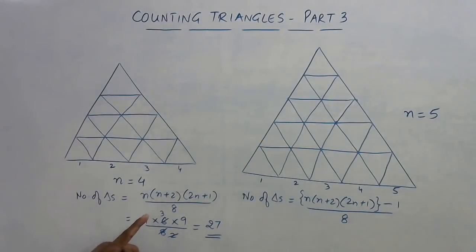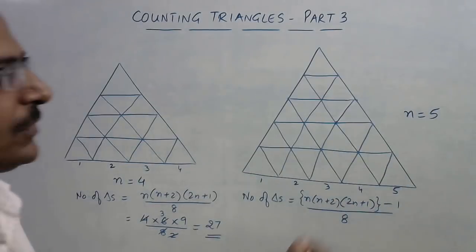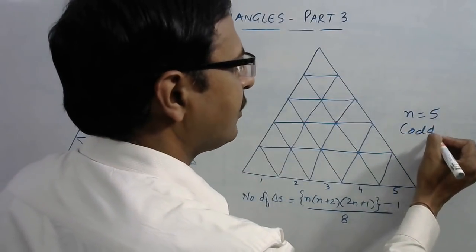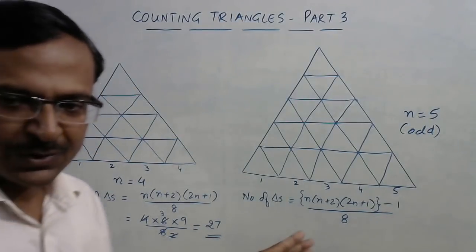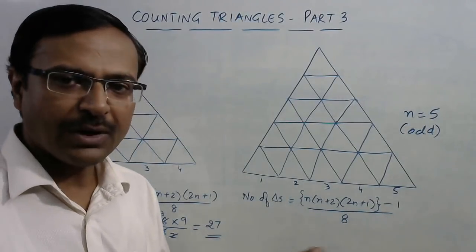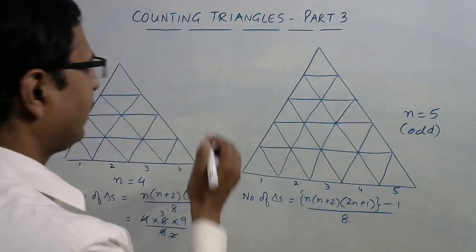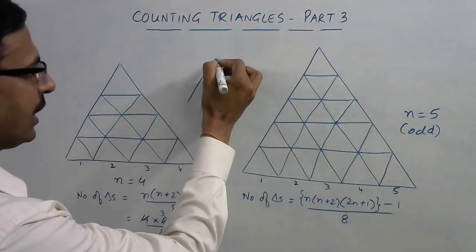Can you see the difference? Here we had only this much formula when the value of n is even, but when the value of n is odd, this is odd, then we have to subtract one from this quantity and then divide it by eight. So let's apply this formula in a simple three.